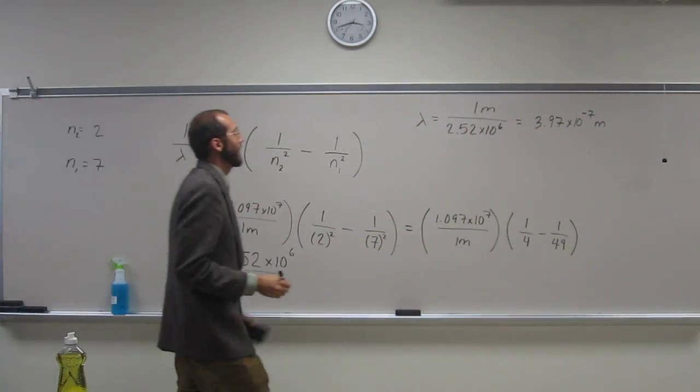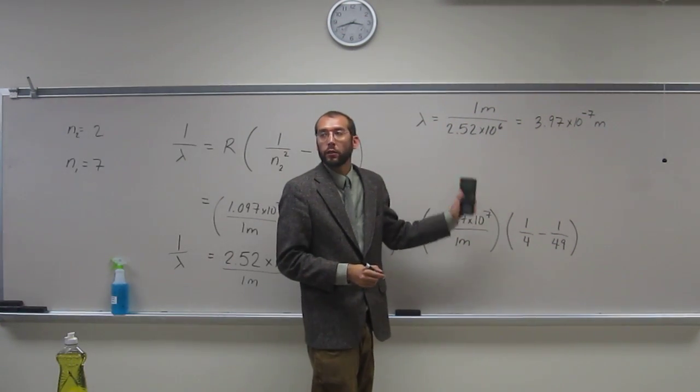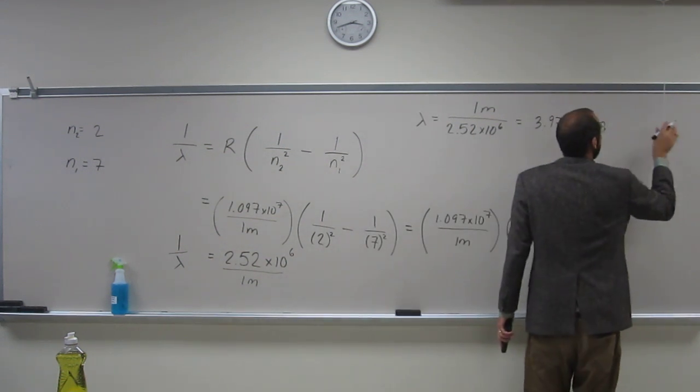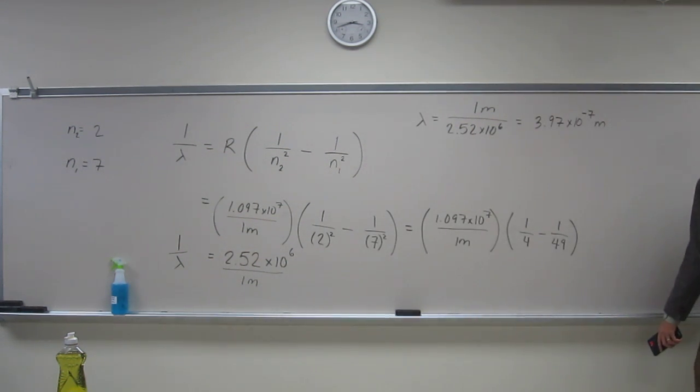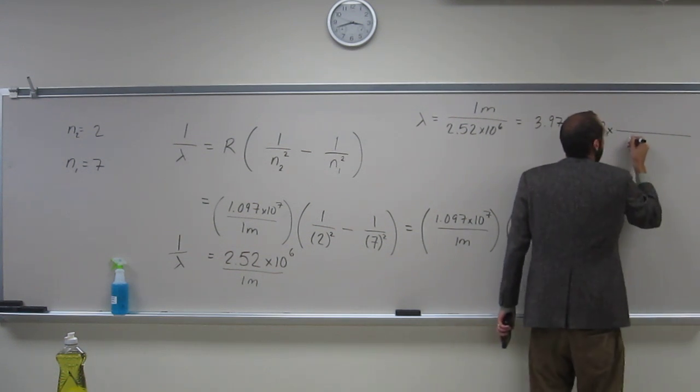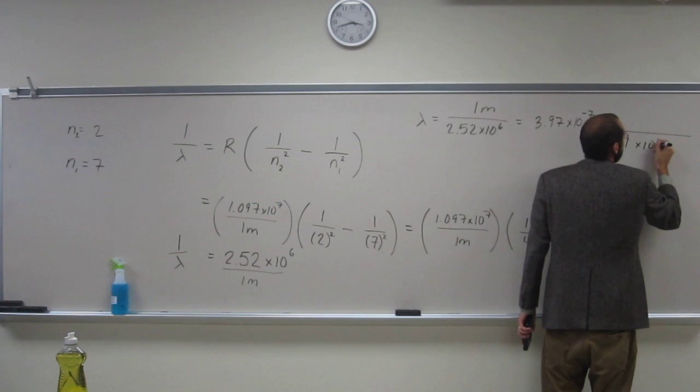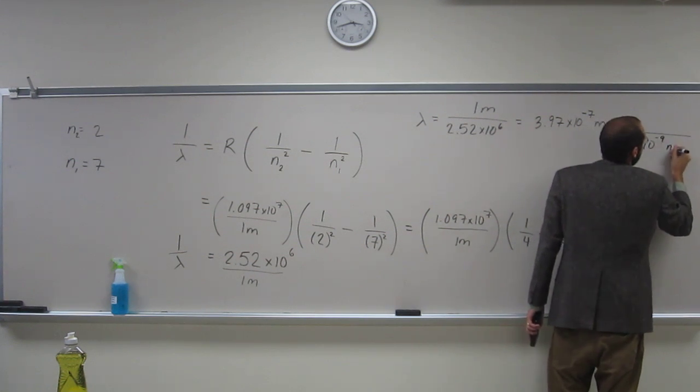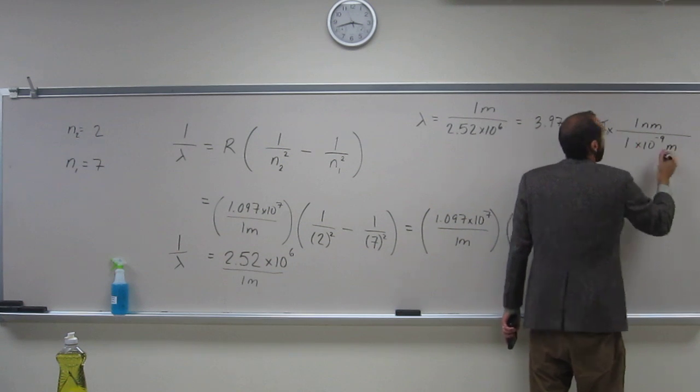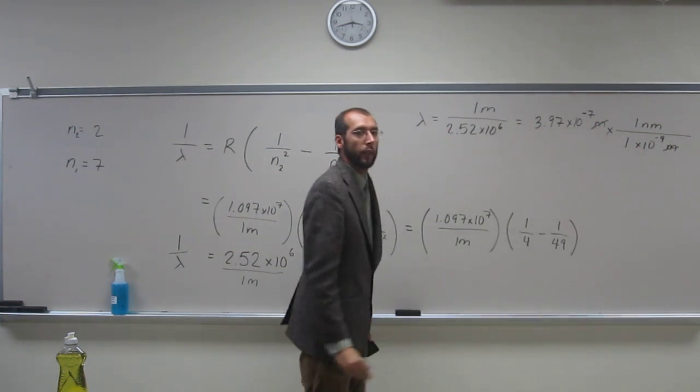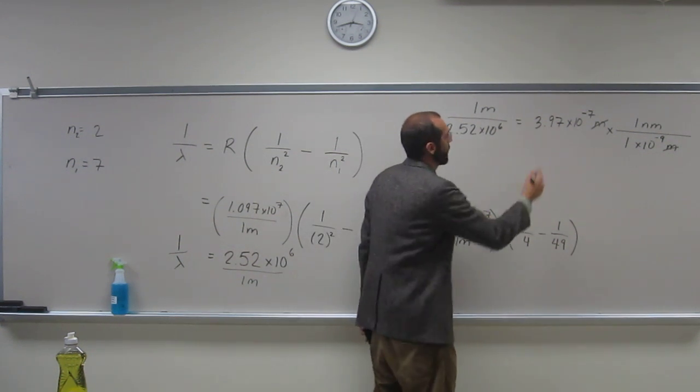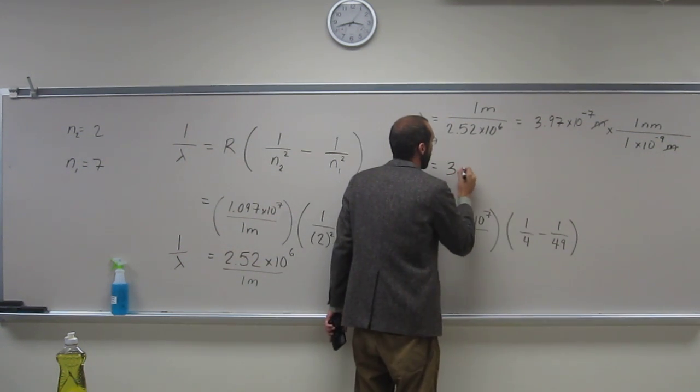But it says to do it in nanometers. In order to convert this to nanometers, we've got to remember the conversion factor. I know I gave it to you guys earlier. 1 times 10 to the negative 9 meters is 1 nanometer. Cancel like that. And then, of course, when we do that, hopefully you guys know what it is.